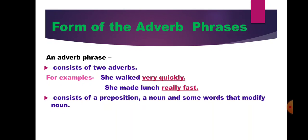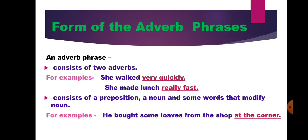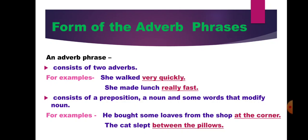An adverb phrase can also consist of a preposition, a noun, and some words that modify the noun. Example: 'He bought some loaves from the shop at the corner.' The group of words 'at the corner' is an adverb phrase — it tells us where the action is done, it consists of the preposition at and the noun corner, and it also modifies the noun shop. Another example: 'The cat slept between the pillows.' The group of words 'between the pillows' tells us where the action is done, and consists of the preposition between and the noun pillow, so it is an adverb phrase.